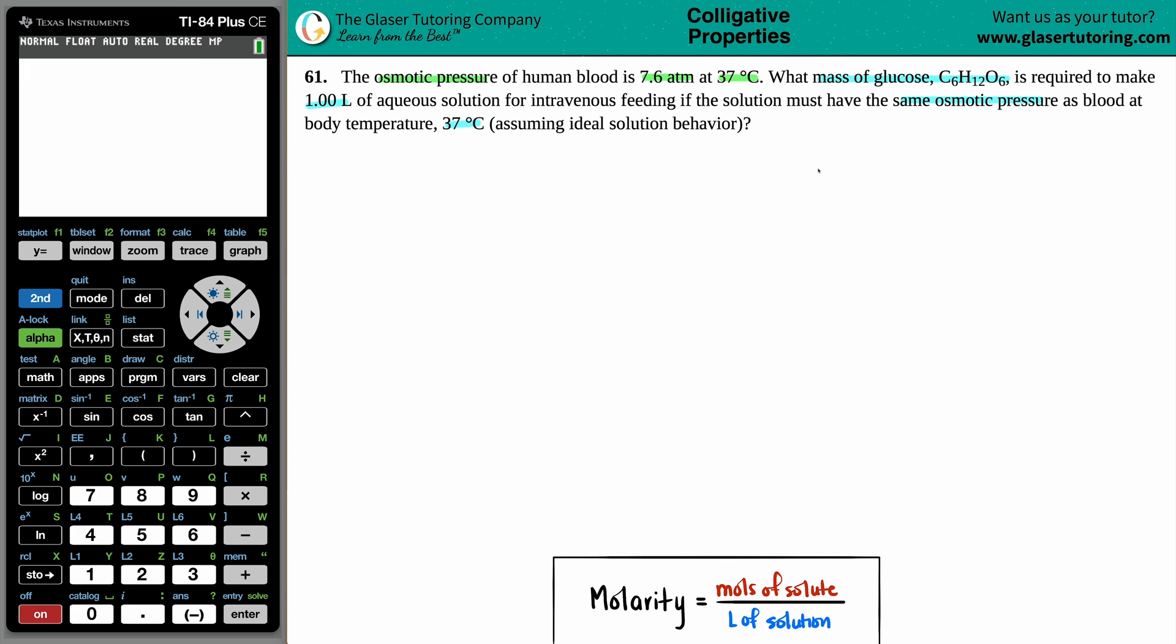Okay, so information that they gave us - they told us we have an osmotic pressure of 7.6 atms at a certain temperature value. And we want to find out the mass. I put that in the back of my mind. I know that I want to search for a mass of glucose here. The mass is always going to be in grams. So somehow I have to get a gram value.